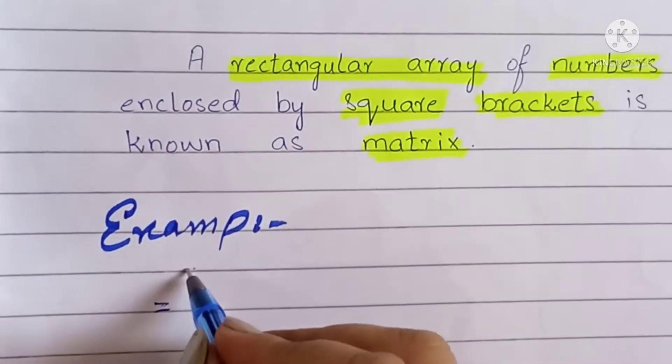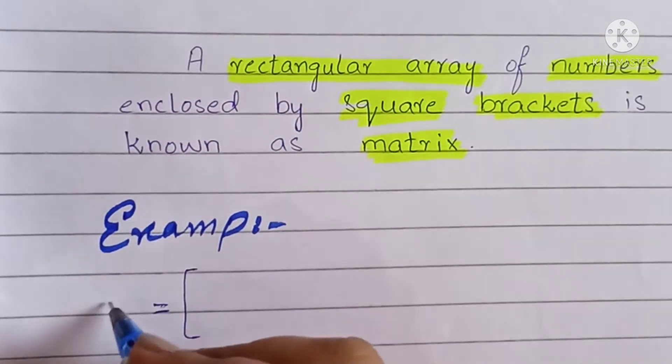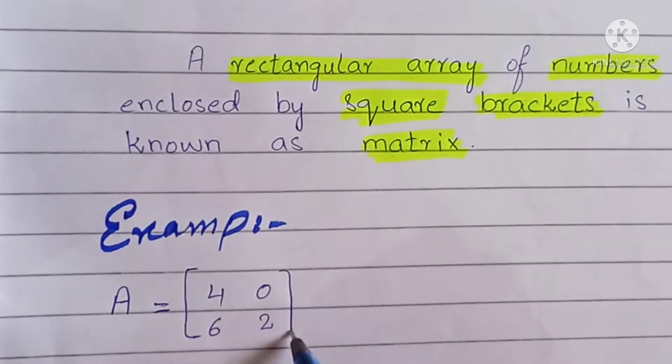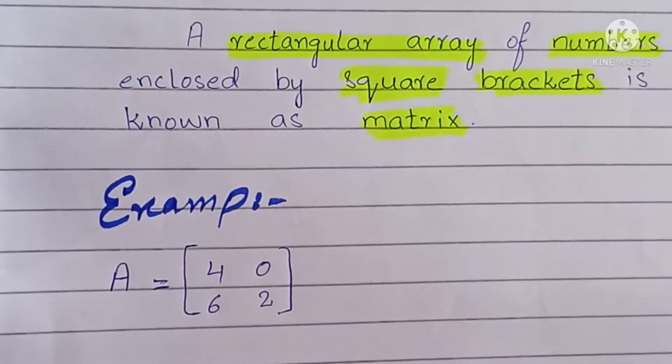For example, here is the matrix denoted by A. 4, 0, 6, 2 are the entries of the matrix.